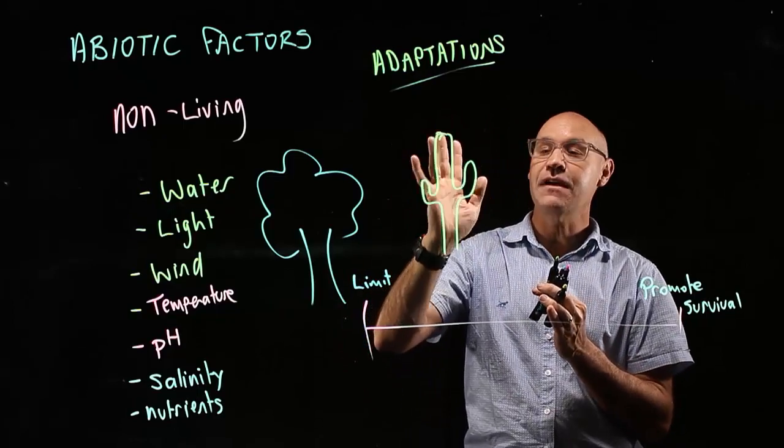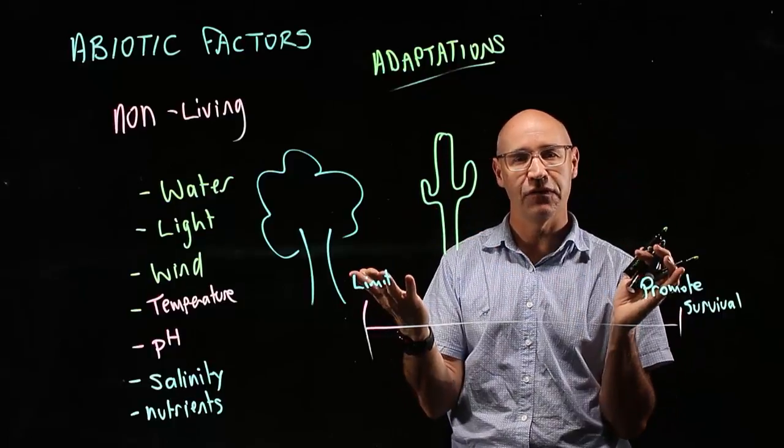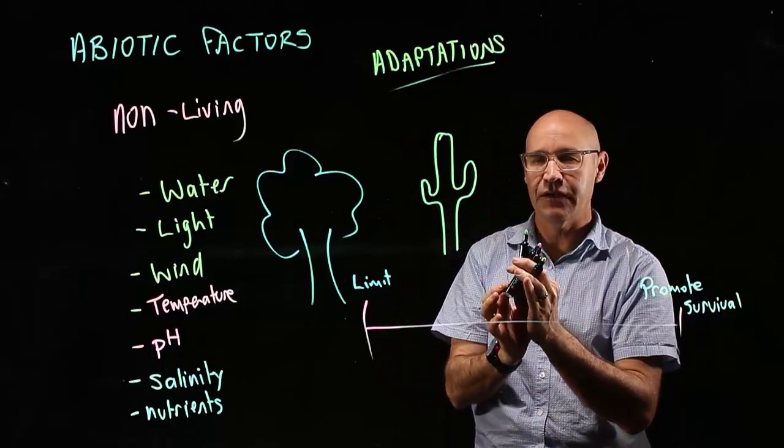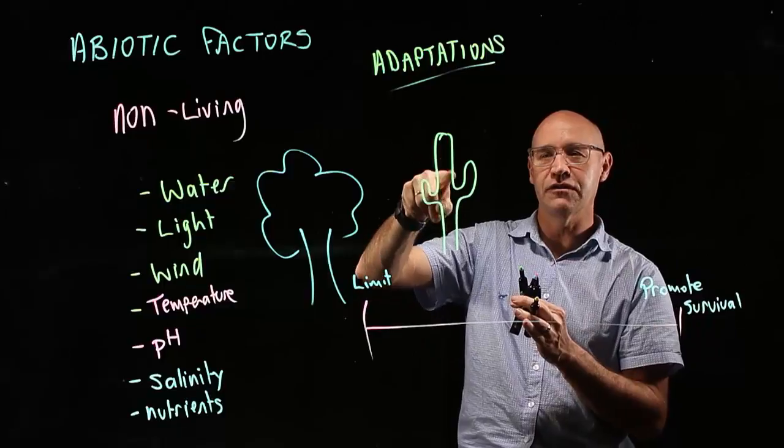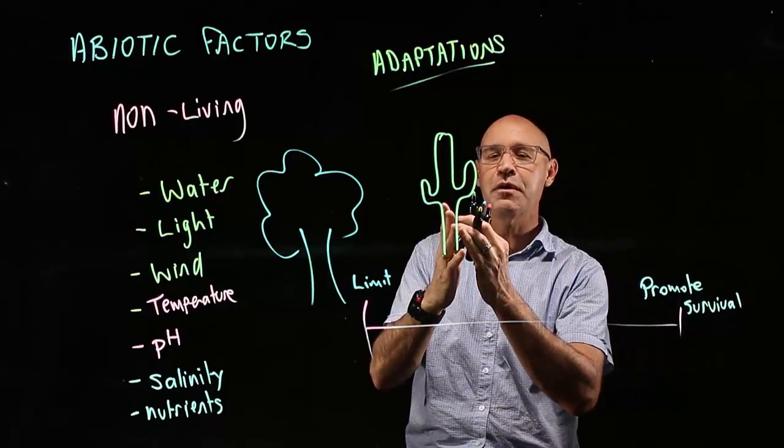It doesn't have any leaves at all because plants normally lose water through their leaves. So the cactus doesn't have leaves. It actually photosynthesizes through its stems and its trunk.